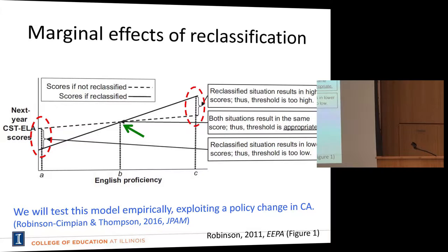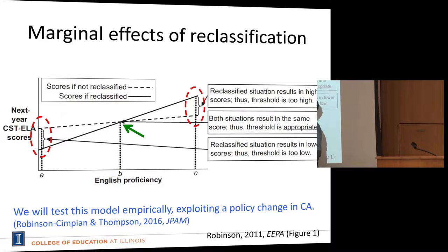If we put English proficiency on the x-axis and some later outcome — like next year's CSTELA score or graduation — on the y-axis, then if the threshold is set at point A, students are still benefiting from specialized linguistic services. Discontinuing those services at that point would produce a drop in next year's test. Similarly, if the threshold is set at point C — where students are at a high level of proficiency and no longer need the services — their time might be better spent on other academic activities, and we'd expect a jump up in achievement.